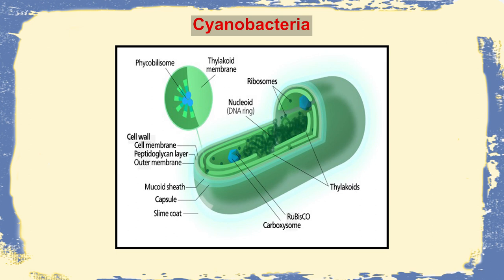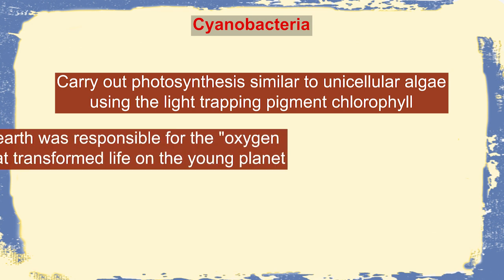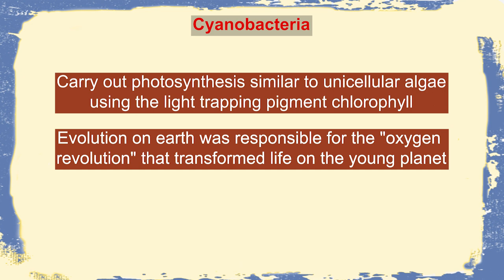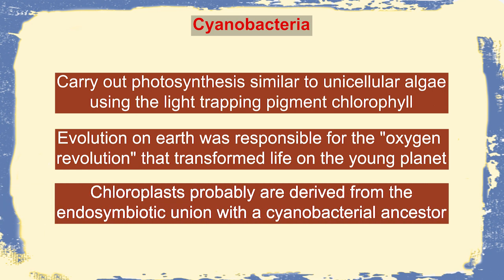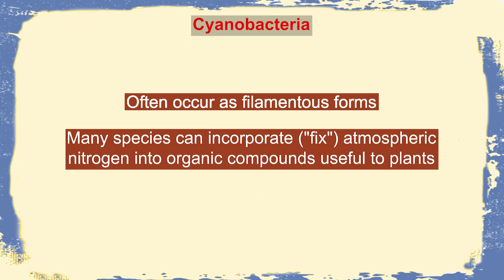Now we come to cyanobacteria, known as blue-green algae. They produce different pigments ranging from black, yellow, green, or red. They are capable of carrying out photosynthesis using the light-trapping pigment chlorophyll, similar to unicellular algae. Their evolution was responsible for the oxygen revolution that transformed life on the young planet. Chloroplasts are probably derived from the endosymbiotic union with a cyanobacterial ancestor. Many species can also fix atmospheric nitrogen into organic compounds useful for plants.